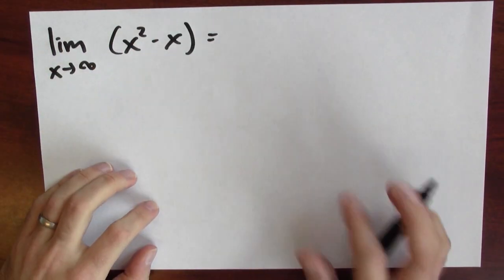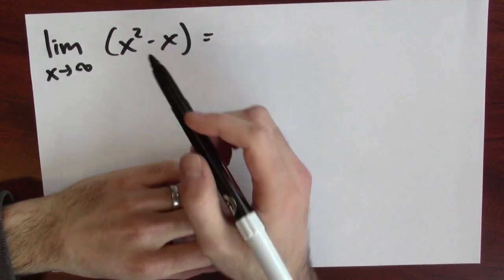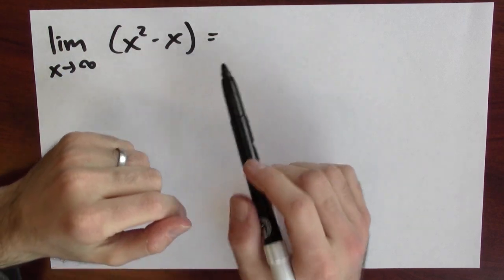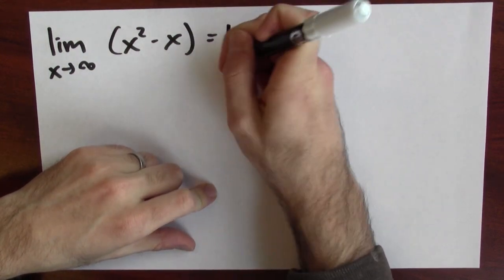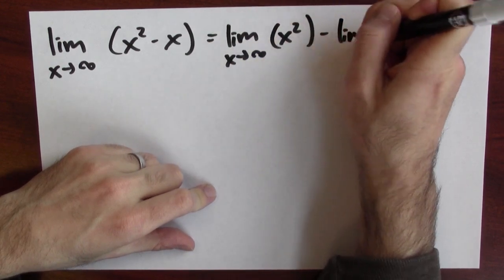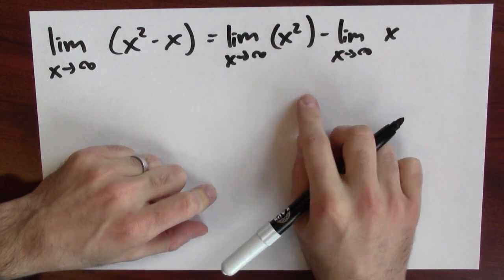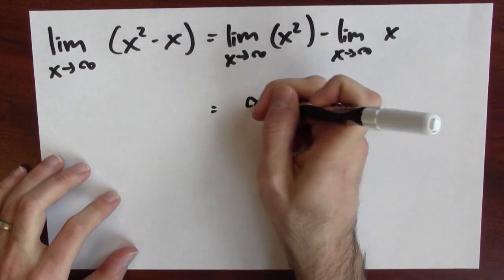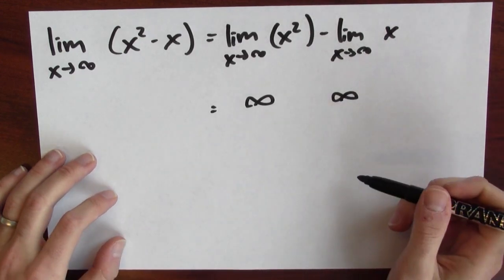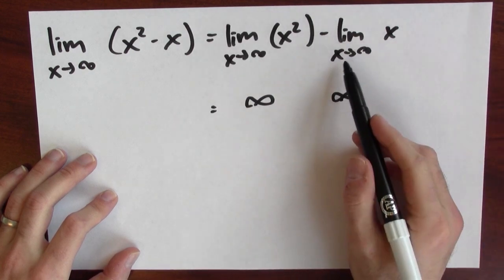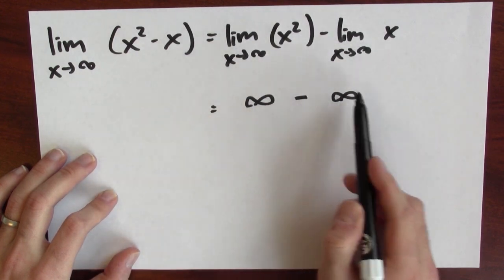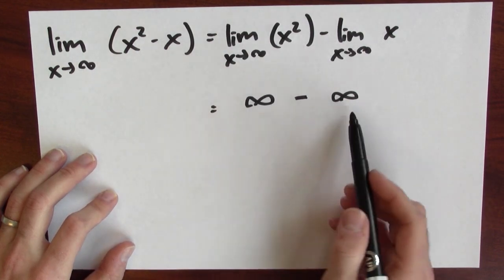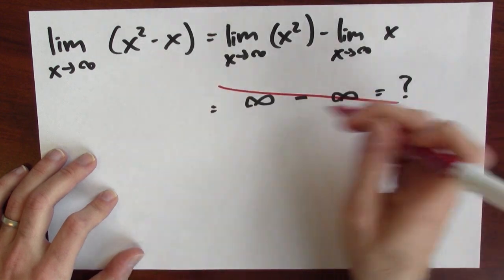So what about infinity minus infinity? Well, it depends. Consider the limit of x squared minus x as x approaches infinity. This is a limit of a difference, and you might remember that the limit of a difference is the difference of the limits, provided the limits exist. Ignoring that last part, you might blindly write the limit of x squared minus the limit of x as x approaches infinity. The limit of x squared is infinity, and the limit of x is infinity — but these limits don't exist as numbers; infinity is not a number. Now you're left with infinity minus infinity and you don't know what to do. That's exactly the sort of thing you're not permitted to think about.